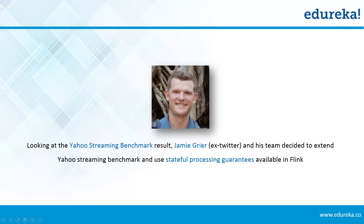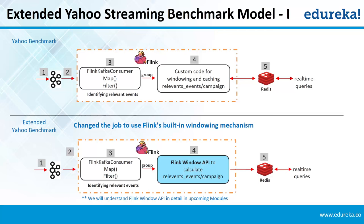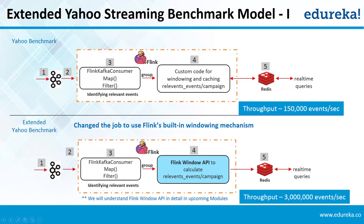Here is the difference between Yahoo Benchmark and Extended Yahoo Benchmark Model 1. In Yahoo Benchmark, they used custom code to compute and cache windows locally and flush results to Redis periodically. In Extended Yahoo Benchmark, the job uses Flink's window API, which fault-tolerantly manages the windows and pushes results to the Redis server. By this simple structural change, they improved application throughput from 150,000 events per second to 3 million events per second.